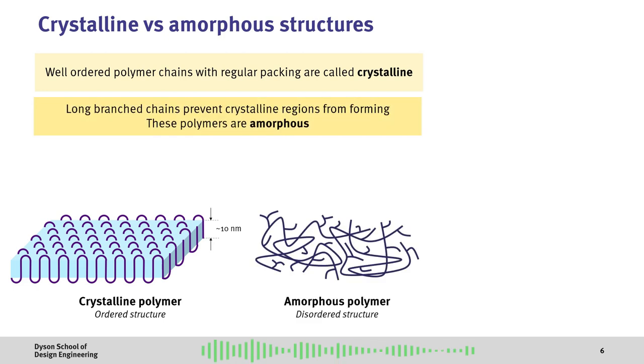However, as chains get longer with branch structures, this makes it more difficult for crystalline regions to form. We therefore call these disordered regions amorphous, which means without clearly defined form.